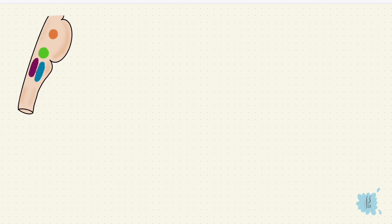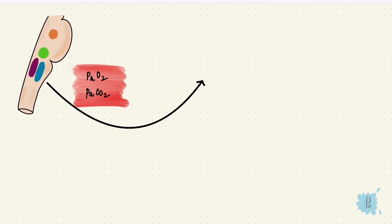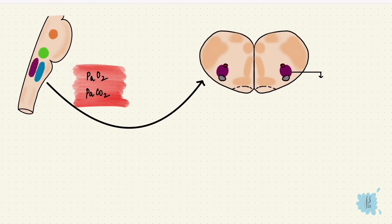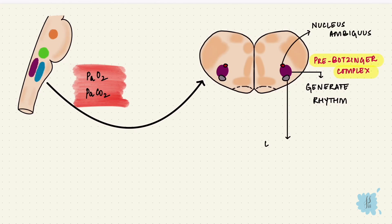The brainstem controls the rate of alveolar ventilation to maintain a constant arterial oxygen and carbon dioxide. There are pacemaker cells in the medulla that generate the rhythm of respiration. This is the pre-Bötzinger complex, on either side of the medulla between the nucleus ambiguus and the lateral reticular nucleus. This is where the rhythm of respiration starts.